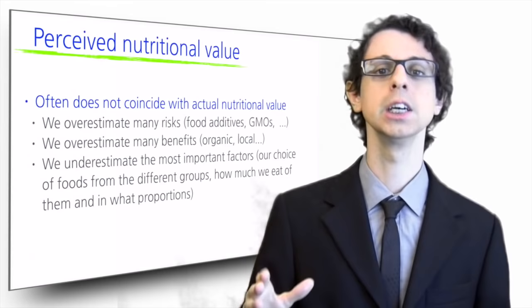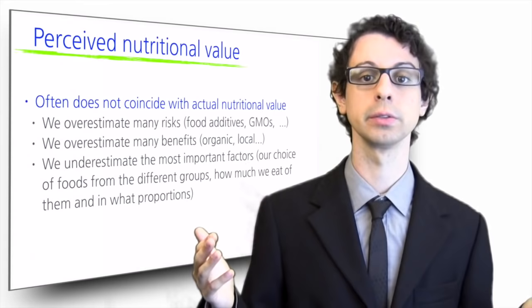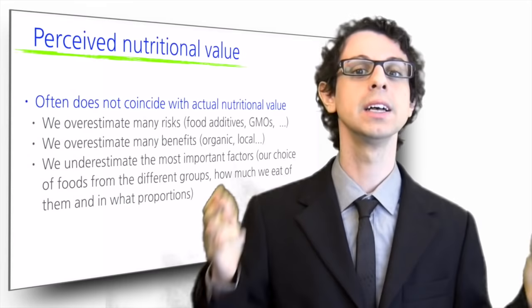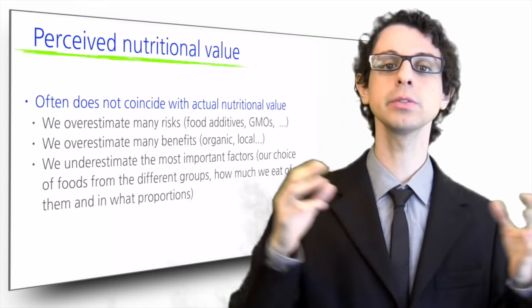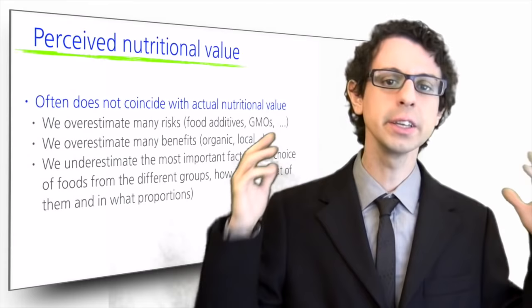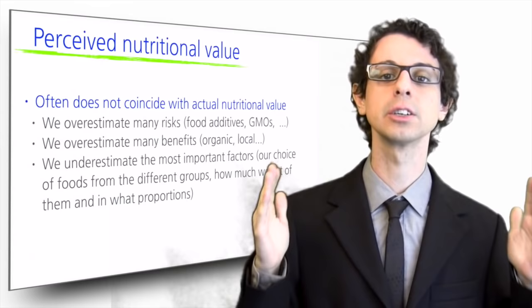We tend to overestimate many risks, such as food additives or GMOs, as well as overestimate many benefits, such as those of eating organic or local food. We have long-held false beliefs that were banged in our heads since we were little, such as the idea that fat is bad, or that drinking a lot of milk is good for our bones. We worry about the effects of migrations from packaging, the potential toxicity of artificial sweeteners and the use of pesticides in agriculture. But at the same time, we tend to underestimate the most important factor of all, which is very simply our choice of foods from all the different groups, how much we eat of them, and in what proportions.